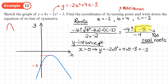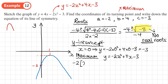The last thing to find is the coordinate of the maximum point. We complete the square on y = -2x² + 4x - 3. First, factor out -2: y = -2(x² - 2x + 3/2). Be careful with signs — the +4x and -3 terms must be correct after factoring.